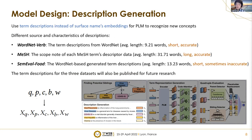Next, we generate the descriptions for the five nodes of evaluation. We use term descriptions instead of surface name embeddings for the pre-trained language model to recognize new concepts. Our datasets cover different sources and characteristics of descriptions. In the WordNet dataset, term descriptions are from WordNet — short and accurate. In the MeSH dataset, descriptions come from the scope note of each MeSH term — long and accurate. For SemEval food, there is no natural description from the dataset, so we generate descriptions based on a WordNet-based generation algorithm — short and sometimes inaccurate. The term descriptions for all three datasets will also be published for future research.